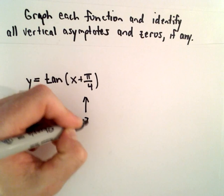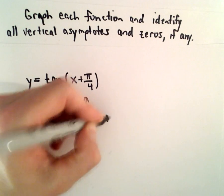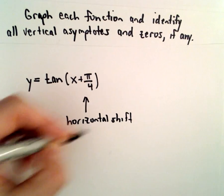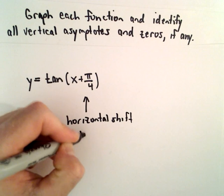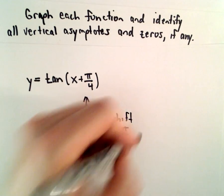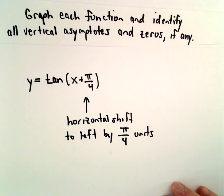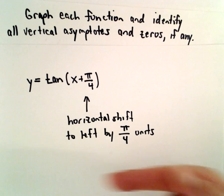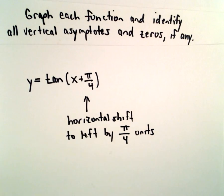We're going to have a horizontal shift to the left by pi over 4 units. So it's going to look like tangent of x just nudged over pi over 4 units.